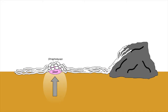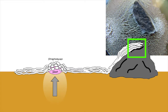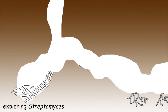Astonishingly, explorer cells are able to traverse all sorts of surfaces, including up and over rocks. A completely unexpected aspect of exploration is that it can be communicated to more distant Streptomyces via a volatile compound known as trimethylamine, or TMA.